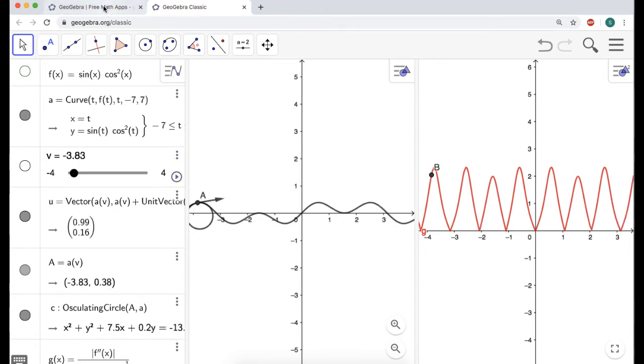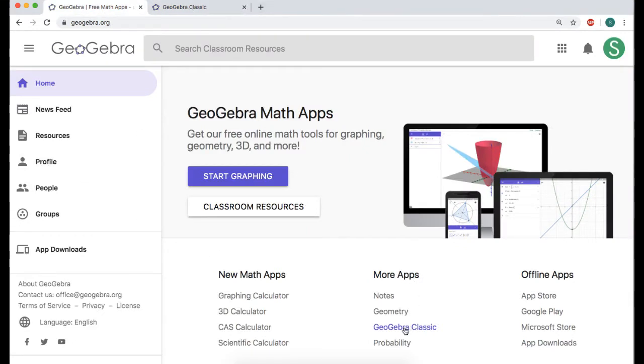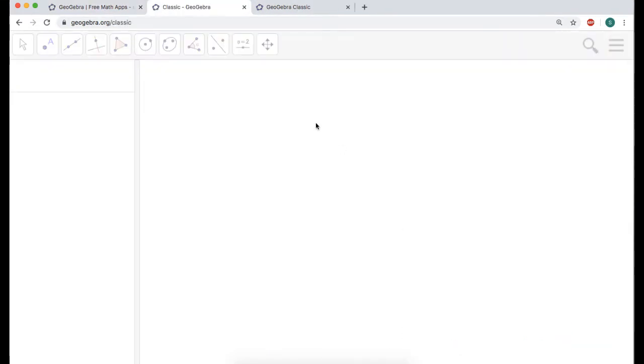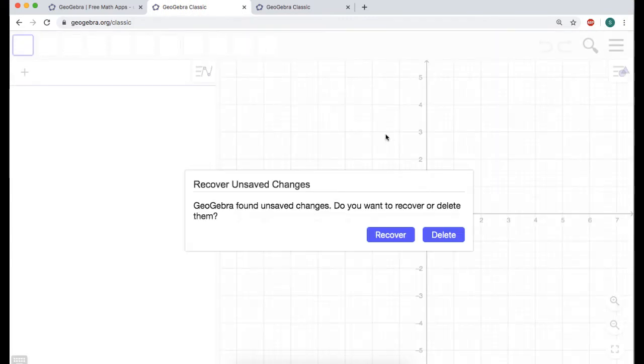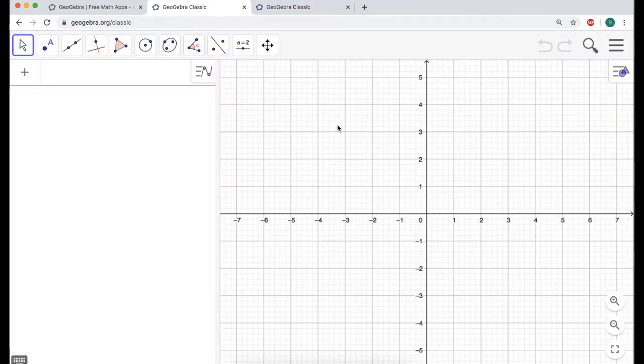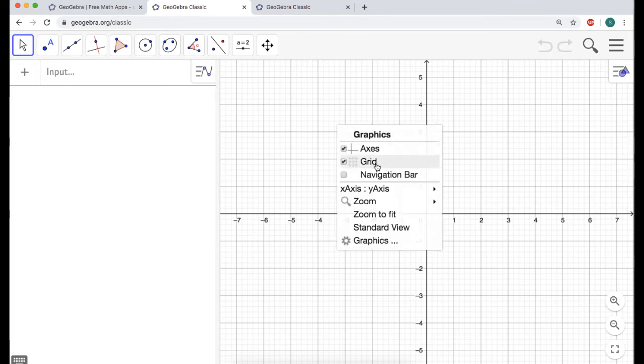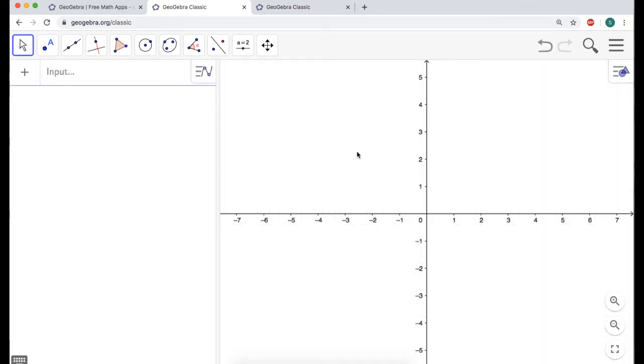I'm going to do the whole thing over again. I'm going to click on GeoGebra Classic again. That's probably going to tell me that it found stuff. I'm going to say delete, because I don't want it to... I've only recently started getting that. I don't exactly know what it means, and I've never once hit recover, so I'm not sure what it would even do.